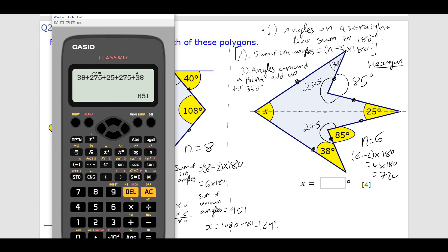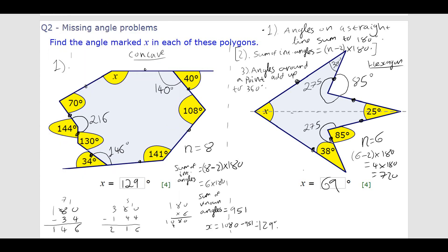So, that's 651. And to find my missing angle, x, I simply subtract that from 720, which gives me 69, which, again, is a fairly sensible answer. It's an acute angle, clearly. And that would be my answer.